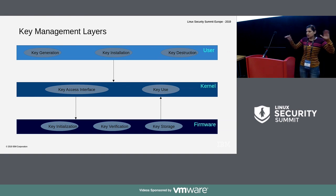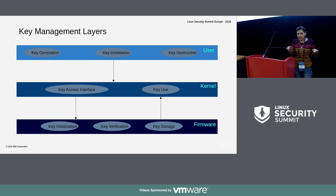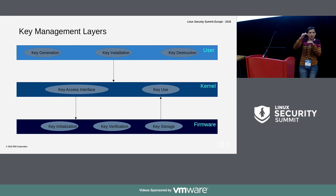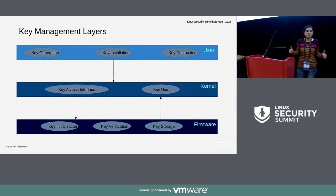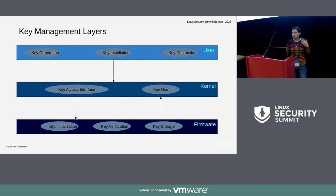I'll break key management into three layers. There is the user layer — sys admins, distros — and the user interface is exposed by the kernel, which is the second layer. The kernel provides access between the user and the firmware, and the kernel is also going to use it because the boot loader is kernel-based. Then there is the firmware which actually does the key management and key update processing — the key initialization, verification, and storage part is with firmware.